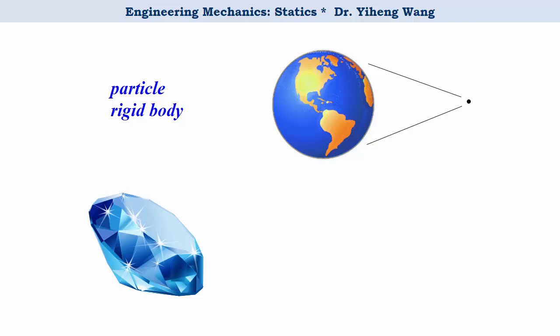Rigid body is another idealization of real-world objects. A rigid body not only has mass, but also has dimensions and geometry, in other words size and shape, that need to be taken into consideration in our analysis. But unlike real-world objects, a rigid body doesn't have any other material properties such as elasticity, therefore it will not deform.